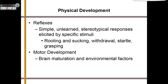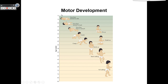We also monitor motor development — we look at brain maturation and environmental factors. By about 16 weeks, babies should be able to turn from their stomach to their side. By 28 weeks, they're sitting up. By 36 weeks, they've started crawling. By about 52 weeks, they're standing up. They've started walking at 64 weeks, and by 80 weeks, they are walking out the door.